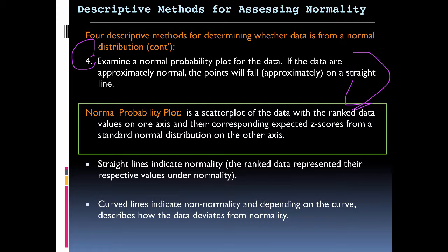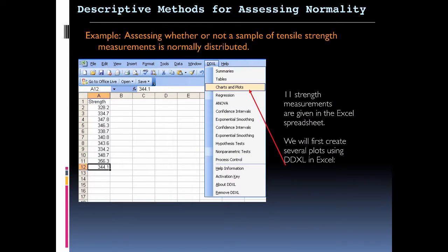...and their corresponding expected z-scores from a standard normal distribution on the other axis. So we're looking at straight lines, which indicate normality, and curved lines, which, depending on the curve, describe how the data deviates from normality.